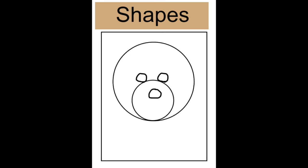We're now going to continue using circles — smaller circles — for the nose and the eyes. You can just draw your own small circles, but notice where they are. The nose is inside the snout and the eyes are resting just on top of the snout.